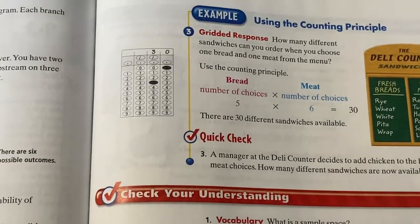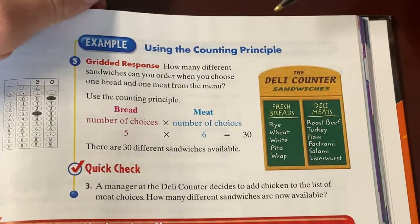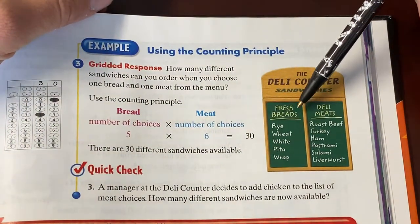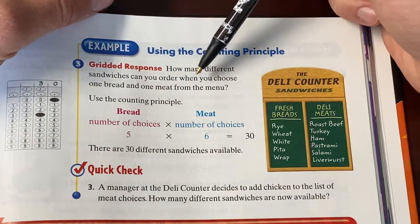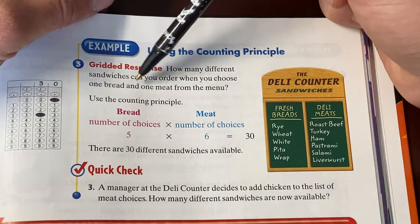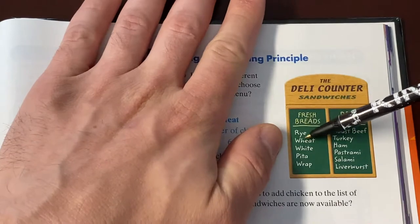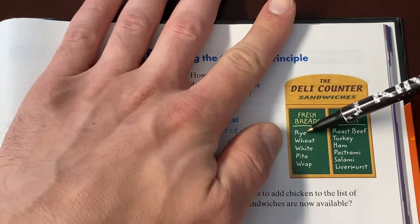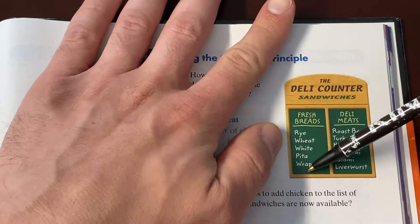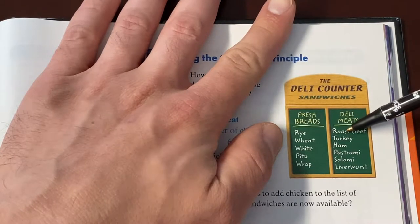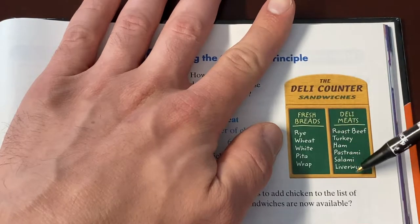Let's read example three here at the top of the next page that I've got a worksheet we'll do some together with. So we have a deli here. They're offering sandwiches. And it wants to know how many different sandwiches can you order when you choose one bread and one meat? So you go over here and you look at the menu. How many choices of a bread do we have? Rye, wheat, white, pita, and a wrap. That's five bread choices. How many deli meat choices do we have? Roast beef, turkey, ham, pastrami, salami, and liverwurst. That is six deli meat choices.